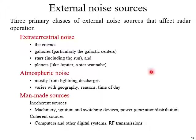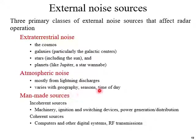External noise sources include extraterrestrial noise coming from the cosmos, galaxies, stars, and planets. Then there is atmospheric noise, mostly coming from lightning discharge, which varies with geography, season, and time of day. Man-made noise includes incoherent noise from machinery, ignition and switching devices, power generation and distribution, and coherent sources like computers, other digital systems, and RF transmissions.